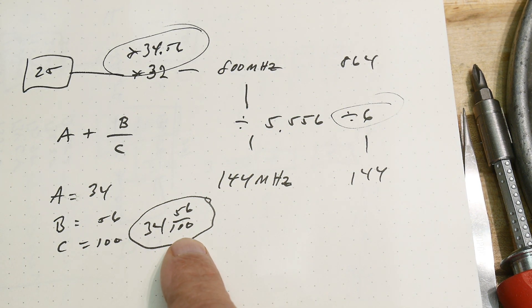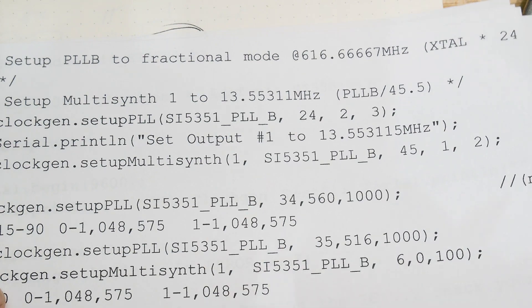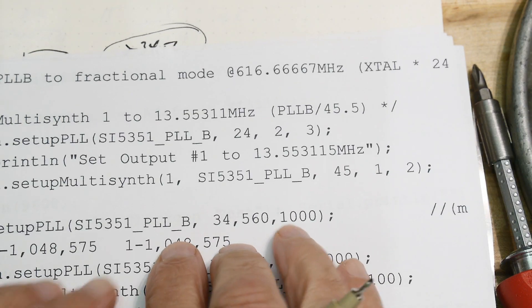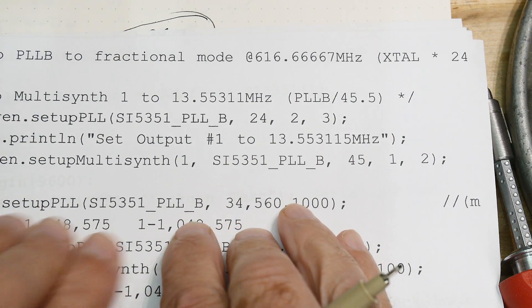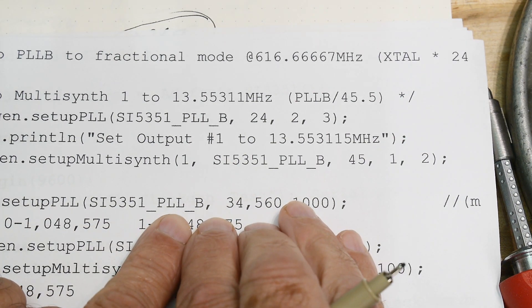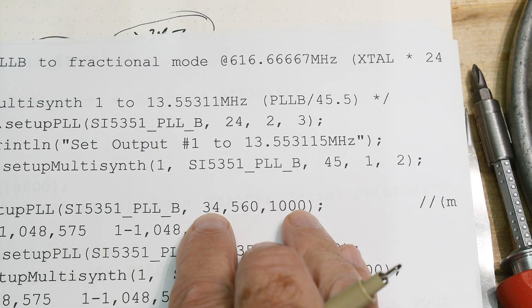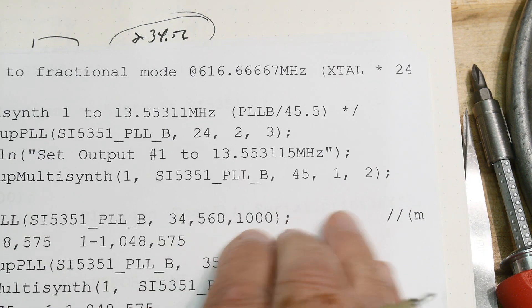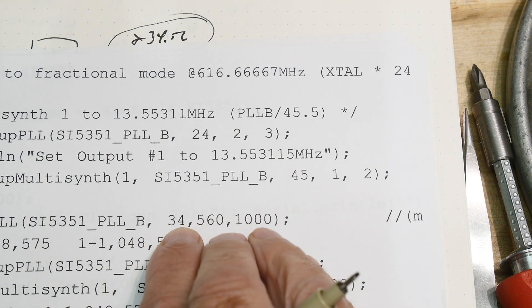And we can take a look at that, I think this is big enough for you guys to see, yeah. So here's the statement here. I'm going to set up phase lock loop B, and I'm going to set it to 34, 560, 1,000, okay? So that's 56 over 100, I just added an extra zero.